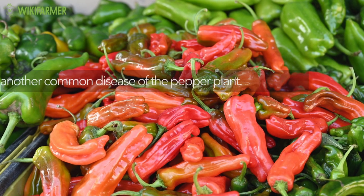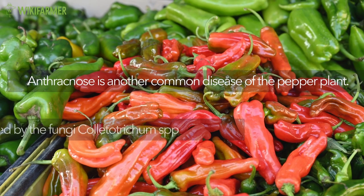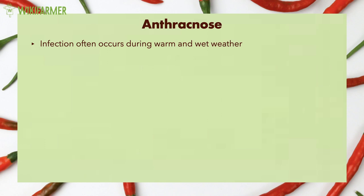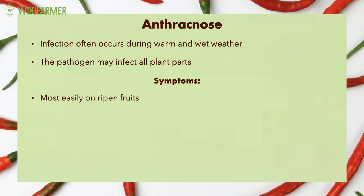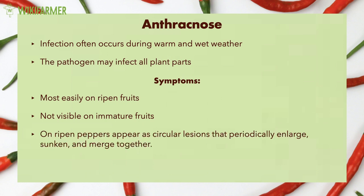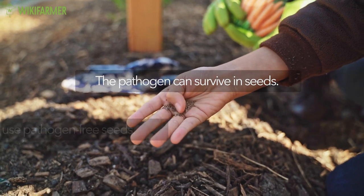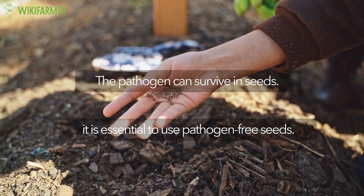Anthracnose. Anthracnose is another common disease of the pepper plant, caused by the fungi Colletotrichum sp. Infection often occurs during warm and wet weather. The pathogen may infect all plant parts; however, we observe symptoms most easily on ripened fruits. The pathogen may infect immature fruits as well, but symptoms are not visible on them. Symptoms on ripened peppers appear as circular lesions that periodically enlarge, sunken and merge together. Under optimum humidity and temperature levels, fungus spores in pink-salmon color appear. Unfortunately, the pathogen can survive in seeds, so it is essential to use pathogen-free seeds.